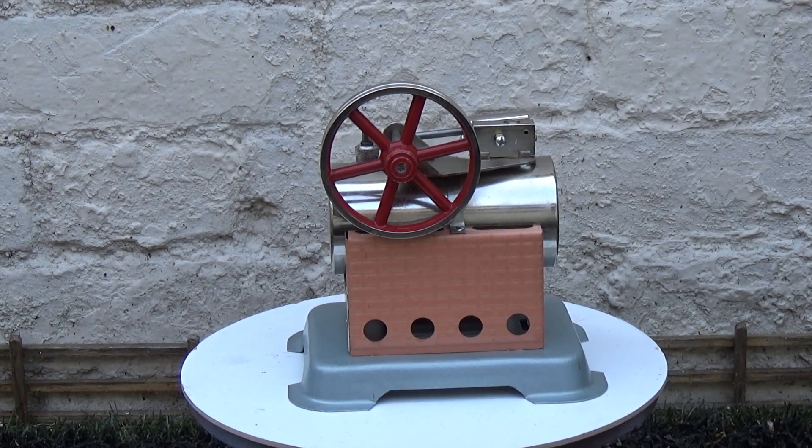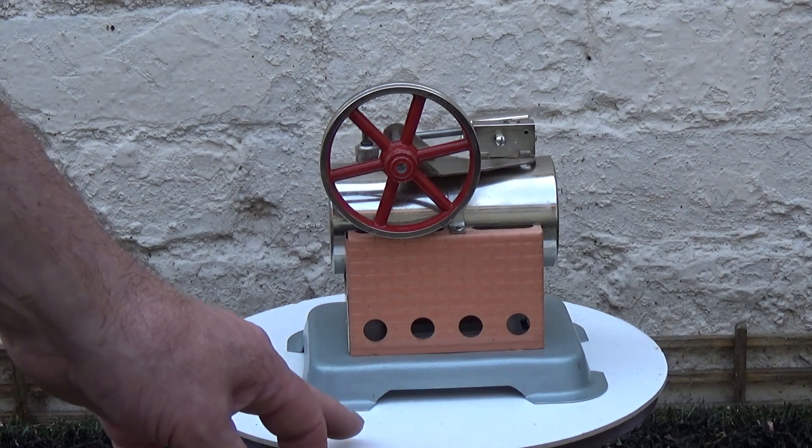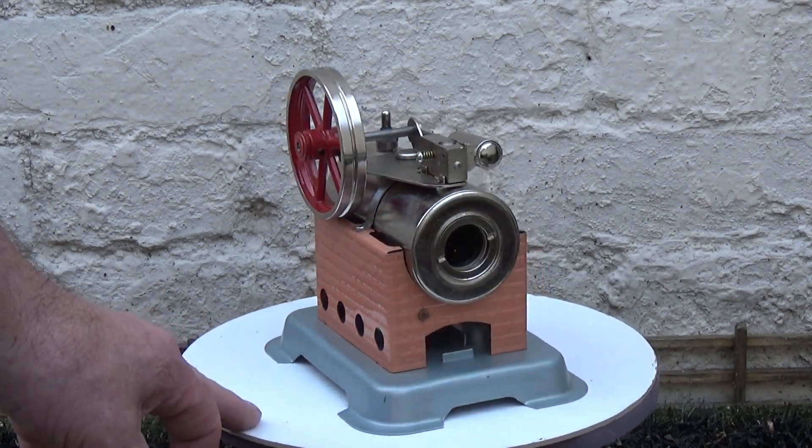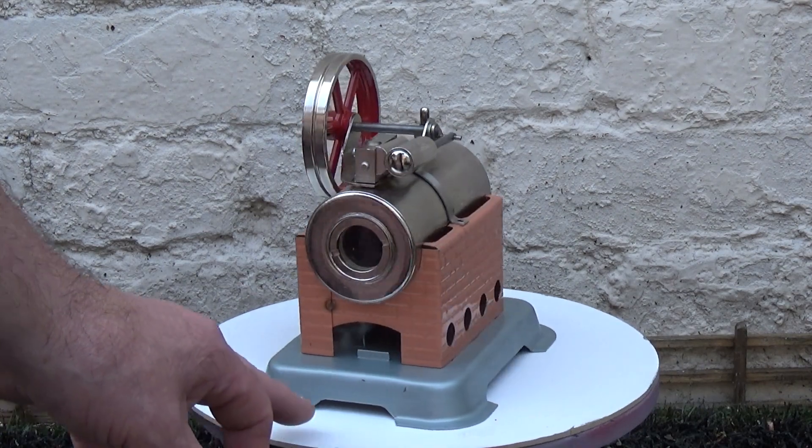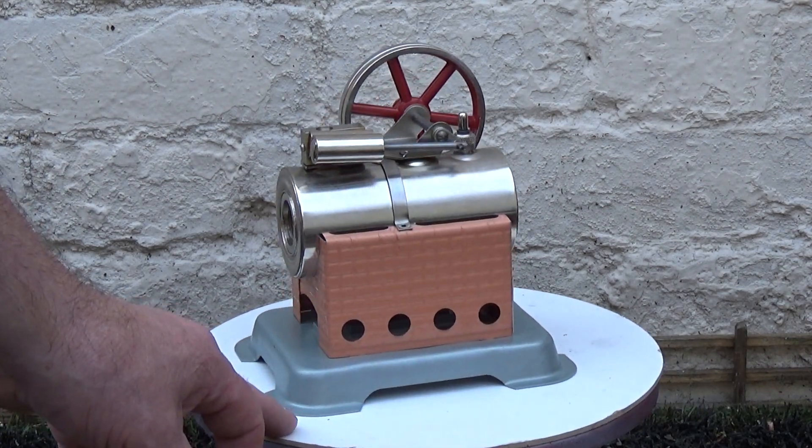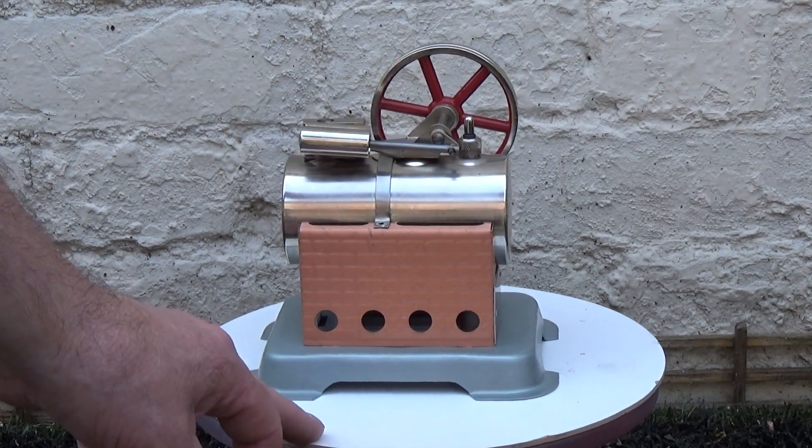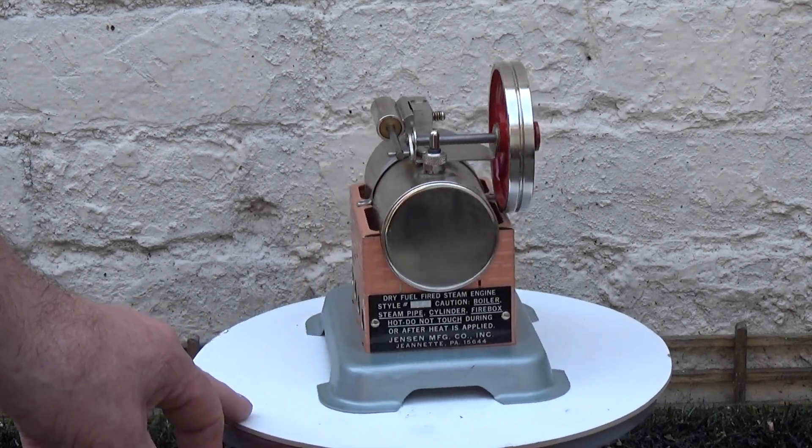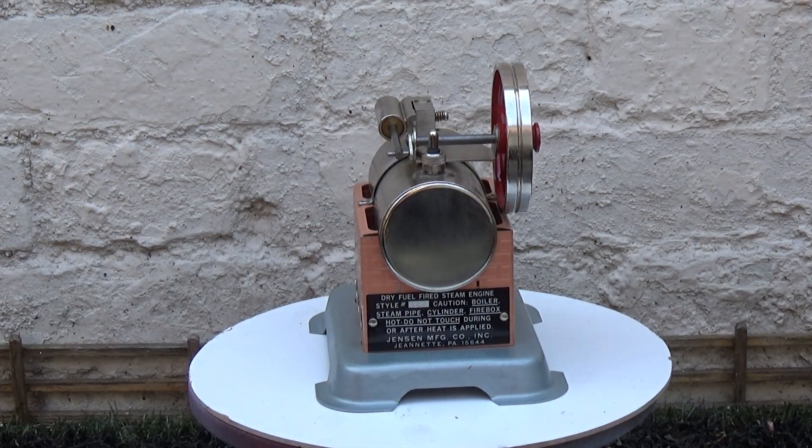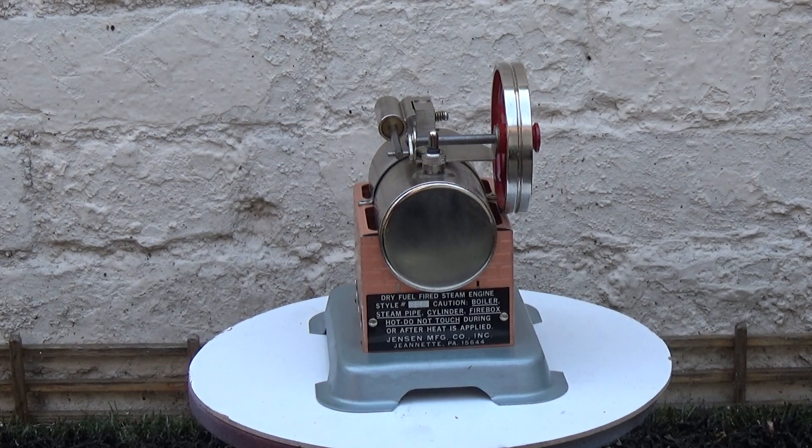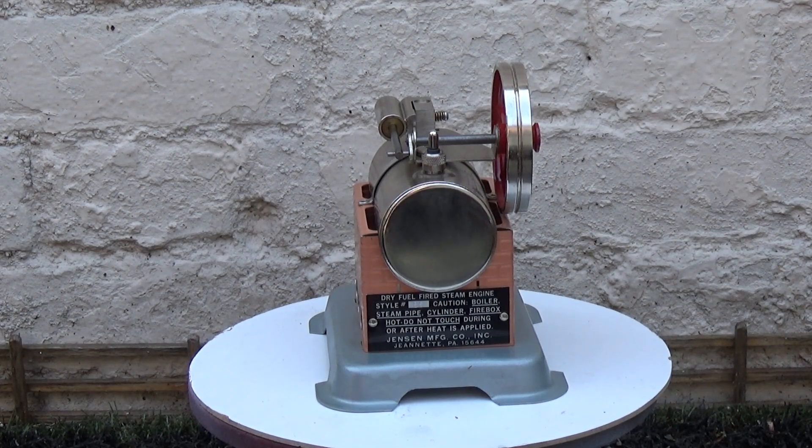Now the 85 is the smallest of the Jensens, lovely little over time. What is interesting about this engine is that it's still in production. You can still buy this from Jensen in the States today. It will cost you $136.95, which in our money is about 106 pounds.